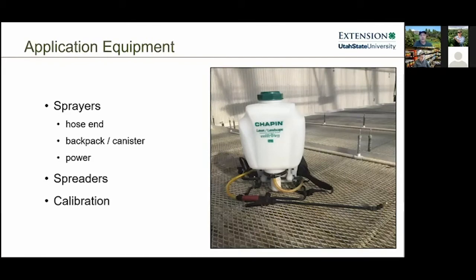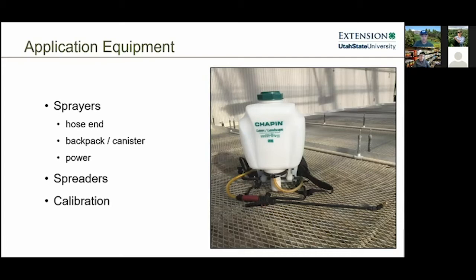Pesticides can be applied in several ways. Sprayers are one of the most common methods — these include hose-end sprayers, where a concentrate tank attaches to a hose and mixes with water as it flows through. Backpack and canister sprayers typically hold one to three gallons of diluted product, letting you cover a much larger area. Spreaders, similar to fertilizer spreaders, are used for granular pesticides like grub control and pre-emergent products such as crabgrass preventers.